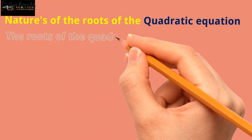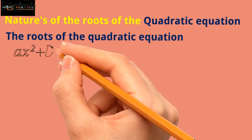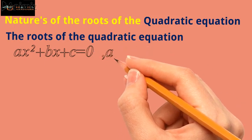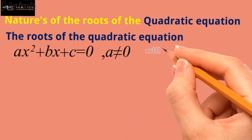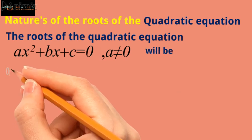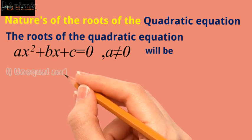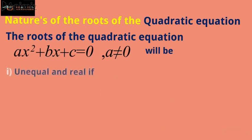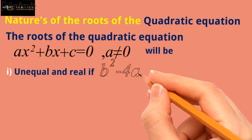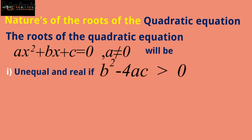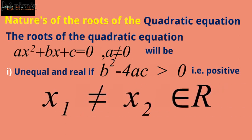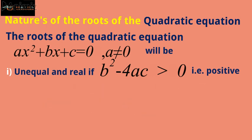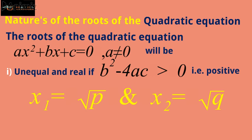The roots of the quadratic equation ax squared plus bx plus c equals 0, where a is not equal to 0: Case one — the roots will be unequal and real if b squared minus 4ac is greater than 0, that is positive. If the discriminant is positive, then the roots will be unequal and real. In real numbers, we have rational and irrational, so both possibilities exist here.